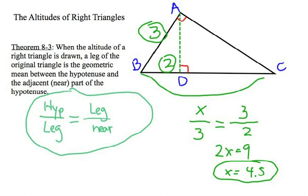So the entire hypotenuse is 4.5. And of course, we can fill in some more information, saying that then DC must be 2.5, if we were curious about that.